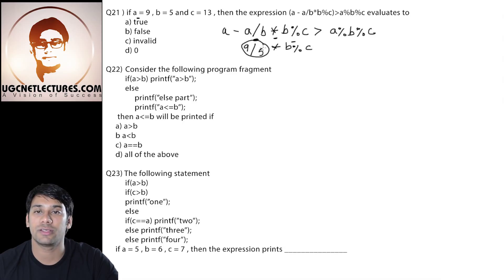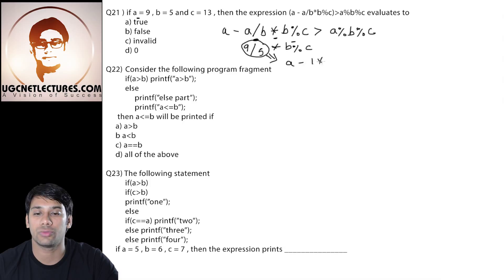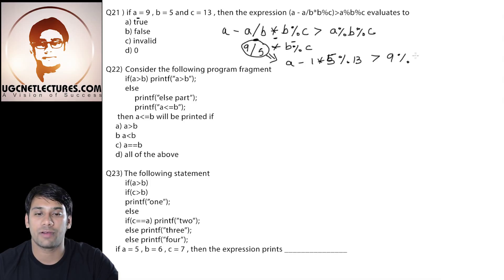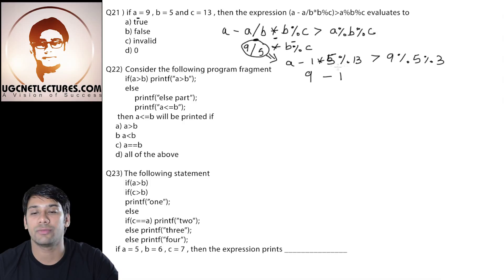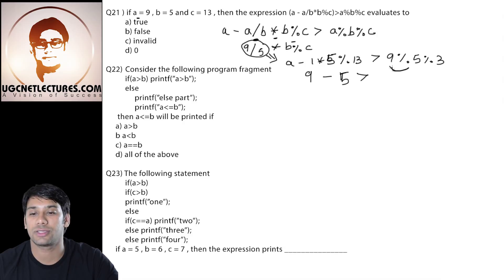Since 9 divided by 5 is an integer operation, it gives only 1 — don't confuse that it gives 1.8. So now this statement becomes A minus 1 multiplied by B modulus C. The value of B is 5, so 5 modulus 13 is greater than 9 modulus 5 modulus 13. With A being 9, this becomes 9 minus 1 multiplied by 5 modulus 13. Multiplying 1 by 5 gives 5, and 5 modulus 13 is 5. Therefore this statement becomes 5, so we need 9 minus 5 to be greater than the right-hand side. In the right-hand side, it is 9 modulus 5.